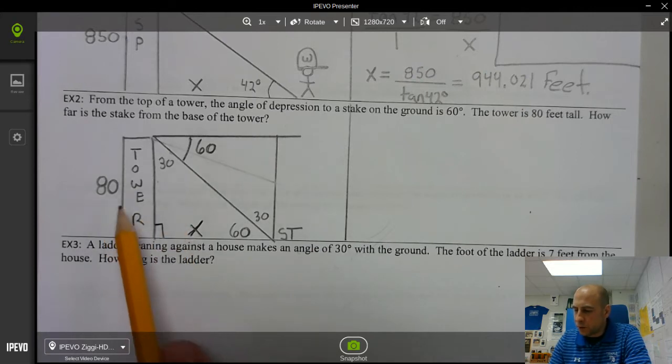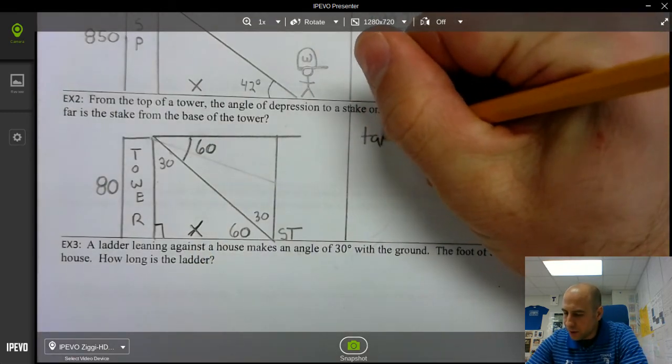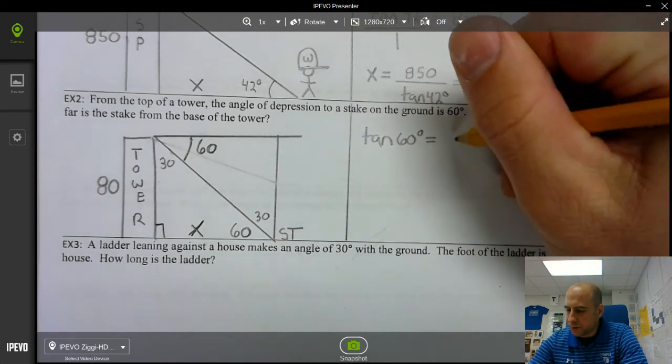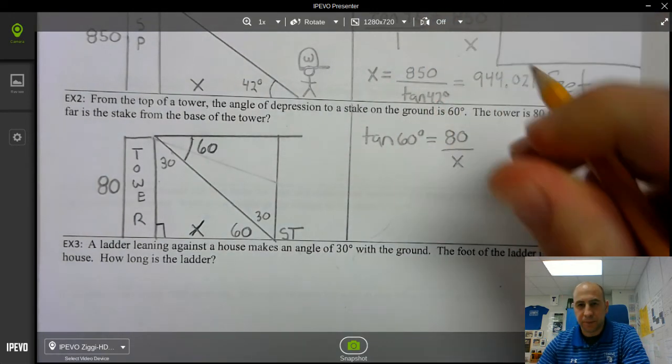Alright. So we have, it looks like, opposite over adjacent so we can use tangent. So tangent of 60 degrees is equal to opposite which is 80 divided by x.